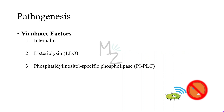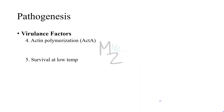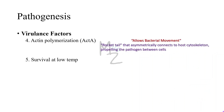Let's talk about the virulence factors. The first is internalin, which helps Listeria attach to host cells. The second is Listeriolysin O (LLO), which helps the bacteria escape phagosome destruction and get into the cytoplasm of the cell to cause infection. The third is phospholipase C, which similarly helps the bacteria escape the phagosome and enter the cytoplasm. The fourth is actin rockets — actin polymerization via Act A — which allows bacterial movement between cells, propelling the pathogen through the host cytoskeleton from cell to cell.